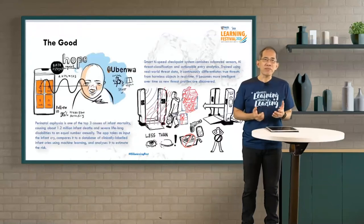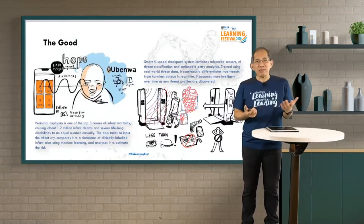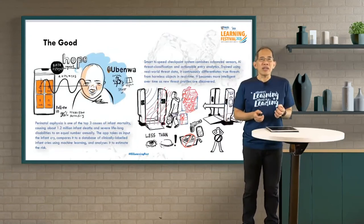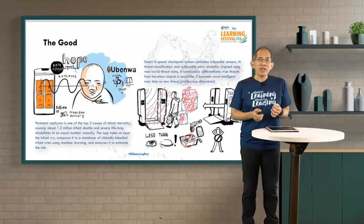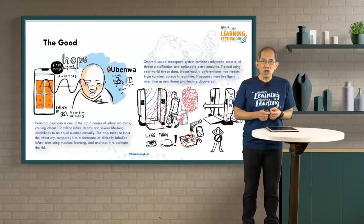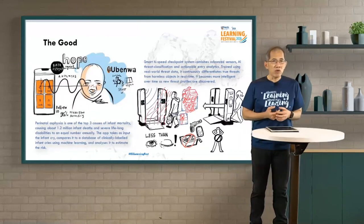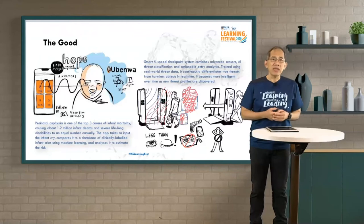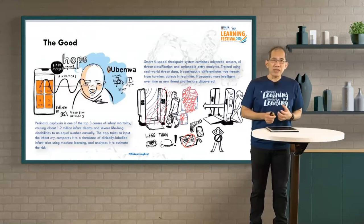There are two examples of good use of AI systems on this slide. On the left is an app — I may be mispronouncing it as it's a Nigerian phrase — but what it does is record the cry of a baby that has just been born, specifically perinatal cries. It listens to the sound of the baby and predicts whether the baby has a condition called perinatal asphyxia, one of the top three causes of infant mortality in the world, causing death of 1.2 million infants annually, and the same number suffering lifelong disabilities.